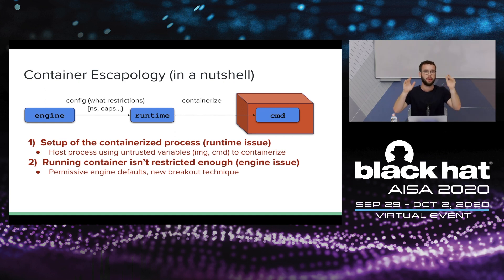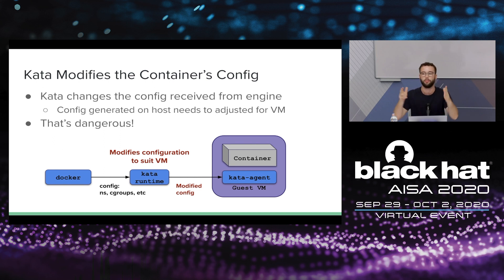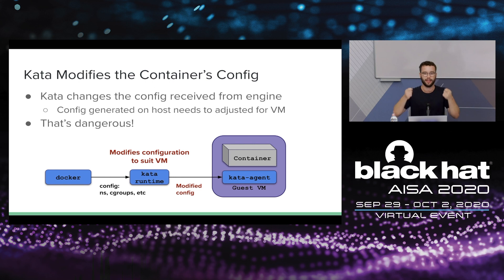When I came to look at Kata, I noticed it's a unique case: Kata is a runtime that actually modifies the configuration received from the engine. It does this because a configuration generated on the host needs to be adjusted to be valid for deploying a container inside a virtual machine with a different kernel and different emulated hardware. But that's dangerous to do, because container engines over years of vulnerabilities have learned how to create a restricted enough configuration. So we can look at what Kata modifies and find issues there.